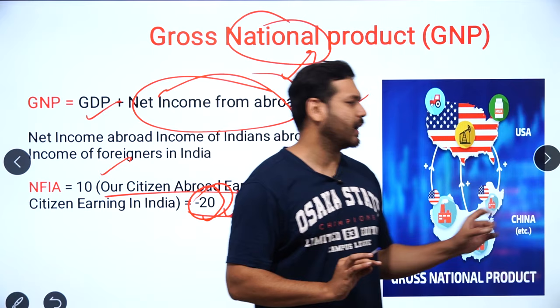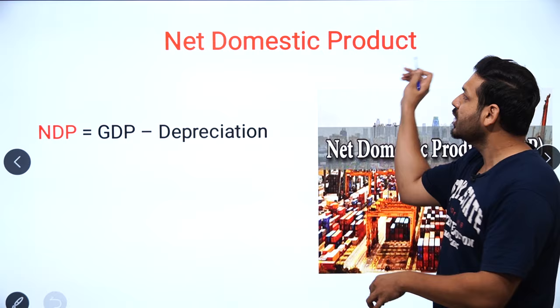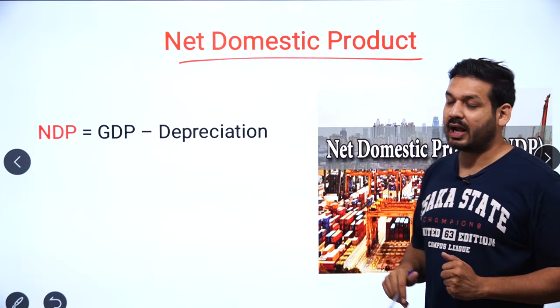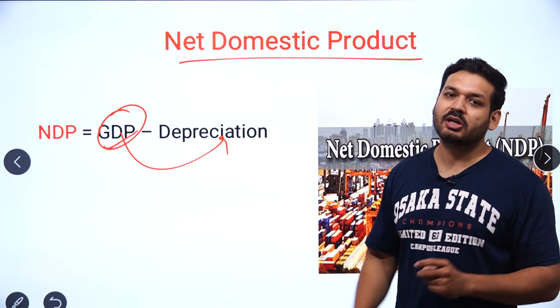Now, example three — NDP. GDP stands for Gross Domestic Product, but now we go from Gross to Net. NDP is Net Domestic Product, which equals GDP minus Depreciation.